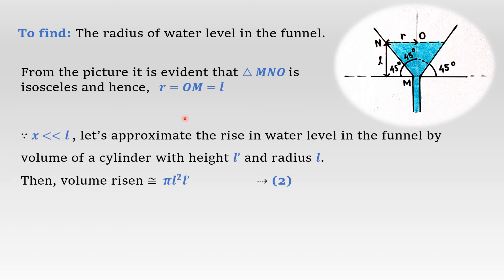Since x is much less than L, let us approximate the rise in water level in the funnel by volume of a cylinder with height l and radius l. Then, the volume risen is approximately πl²·l. Let this be equation 2.